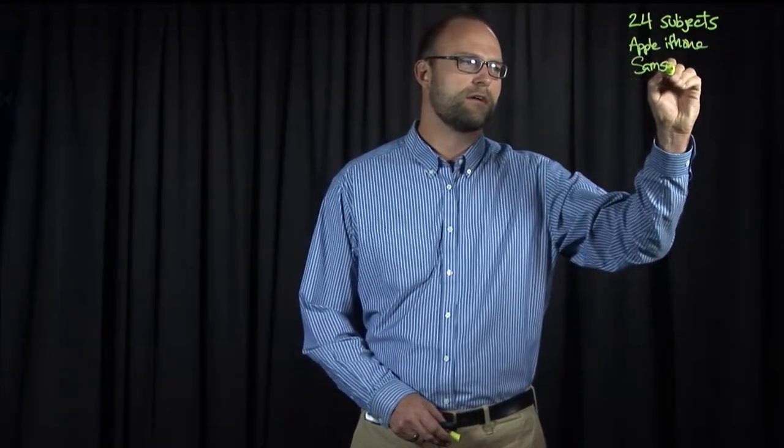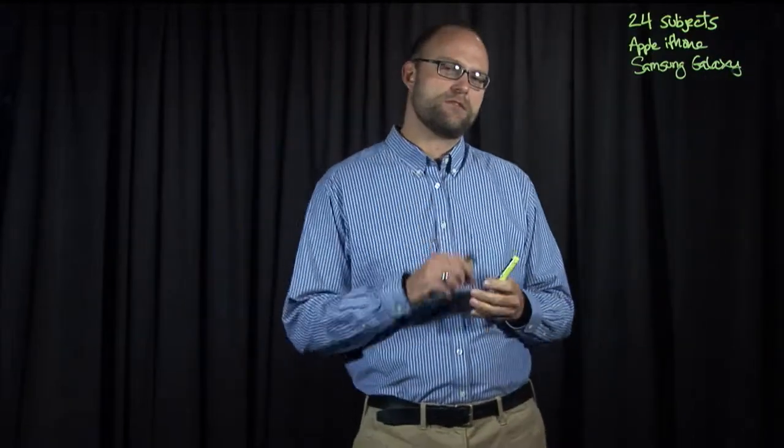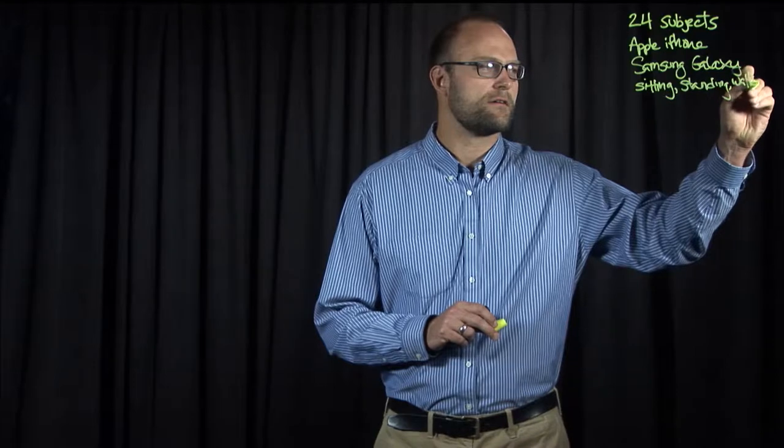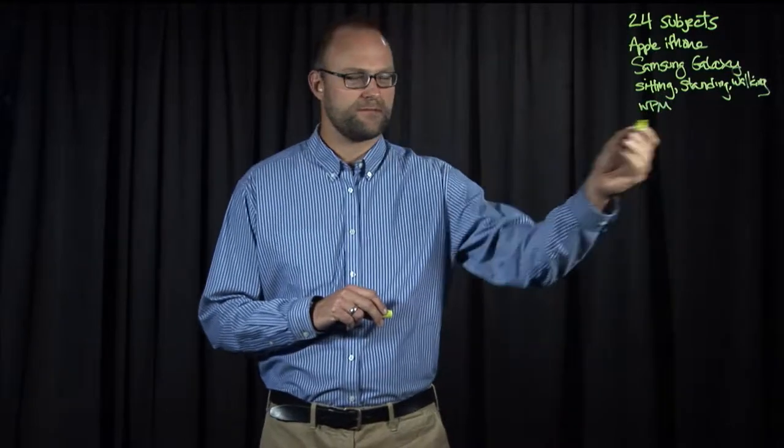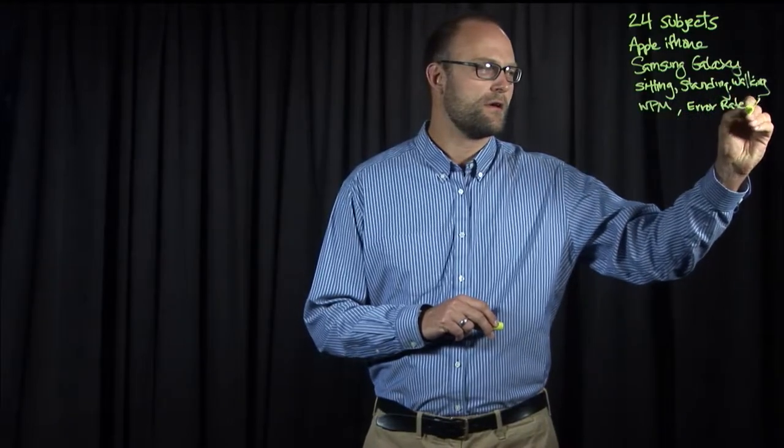Here's the scenario that we'll use. Let's say 24 subjects are in our study, and they use either the Apple iPhone keyboard or the Samsung Galaxy keyboard on a mobile smartphone. And they use one or the other keyboard while they are either sitting, standing, or walking. We're going to measure text entry speed in terms of words per minute and text entry error rate, which is a percentage for each phrase entered.